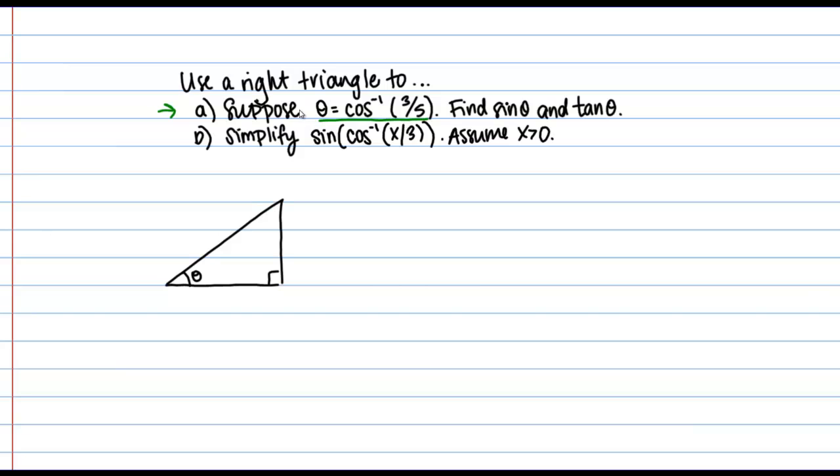So how can I interpret that information? One other way I could say this is that theta is an angle that has a cosine of 3/5. I could also write this as cosine of theta equals 3/5. So what I want to do is set up my triangle according to that fact. I want to make theta have a cosine of 3 over 5.